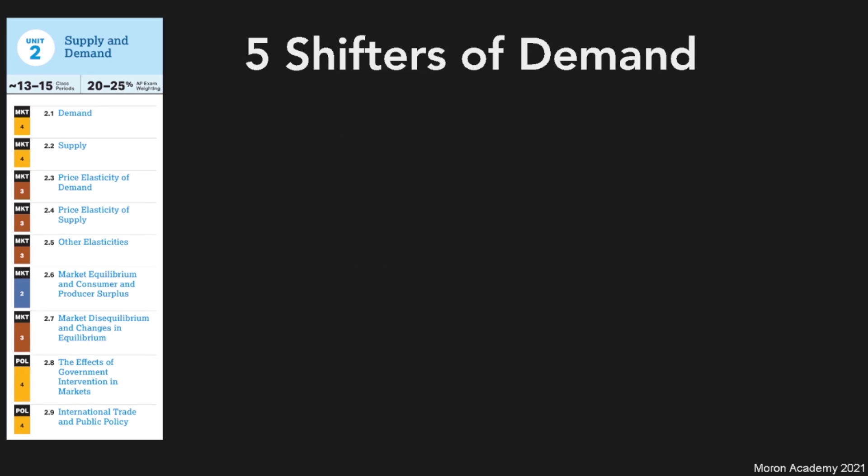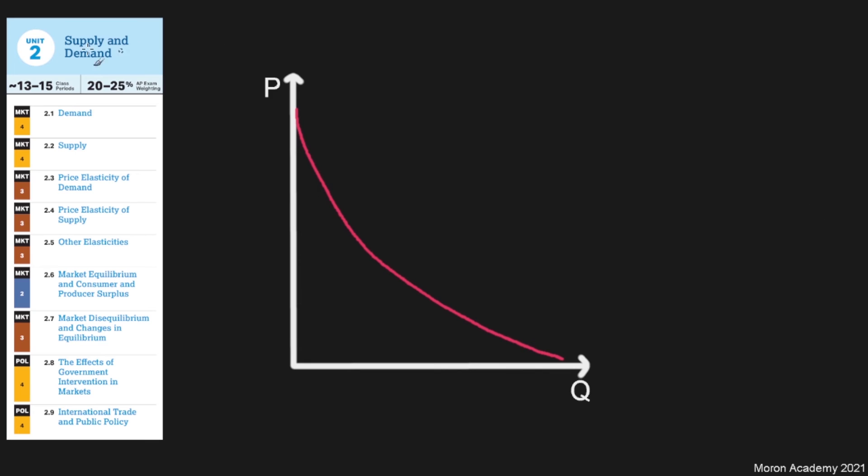And going back to the first graph, what does a shift in the demand even look like? So this is our original line. A shift downwards would be going over here, and a shift upwards would be going outside.